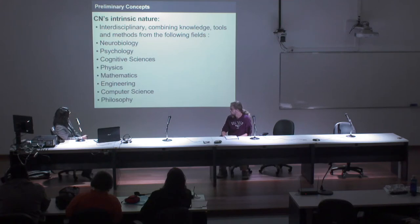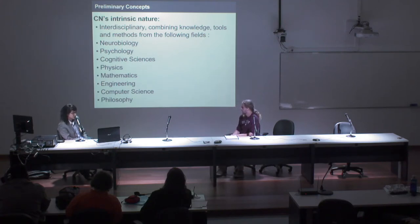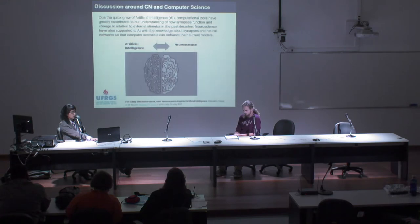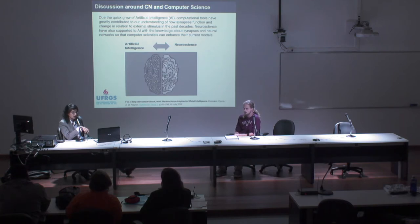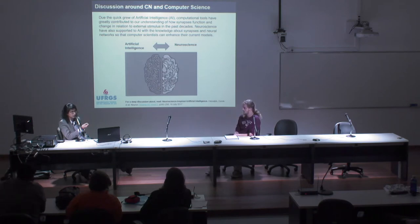What is the strength of computational neuroscience? It roots from its intrinsic interdisciplinary nature, covering several disciplines, knowledge, and methods — from neurobiology, psychology, cognitive science, physics, mathematics, computer science, and philosophy. For this reason, computer science has broad discussions spanning many areas of knowledge.